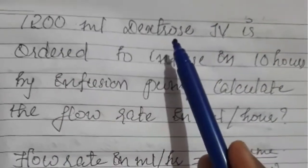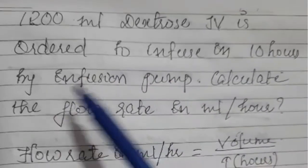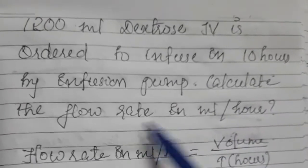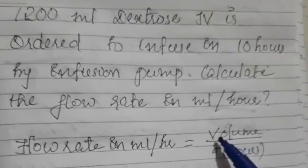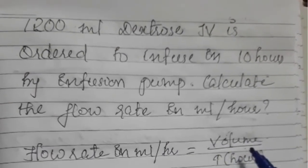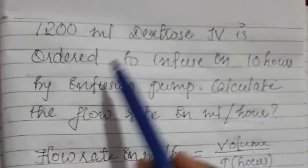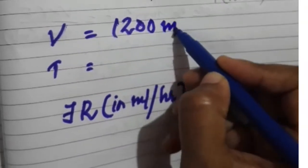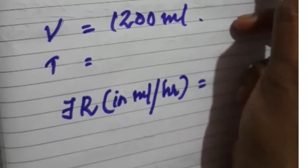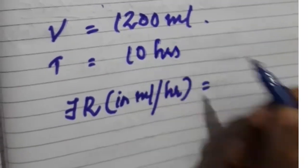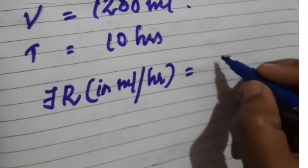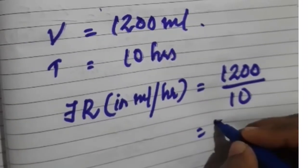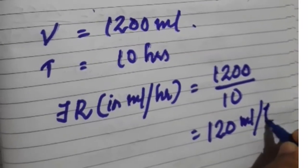Here is another example: 1200 mL dextrose IV is ordered to infuse in 10 hours by infusion pump. Calculate the flow rate in milliliter per hour. The formula is: total volume ÷ time in hours. Volume is 1200 mL and time is 10 hours. Substituting: 1200 ÷ 10 = 120 mL per hour.